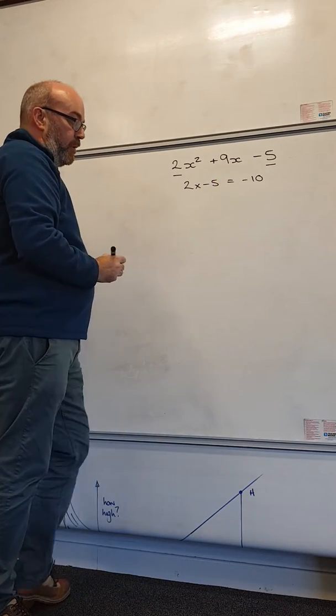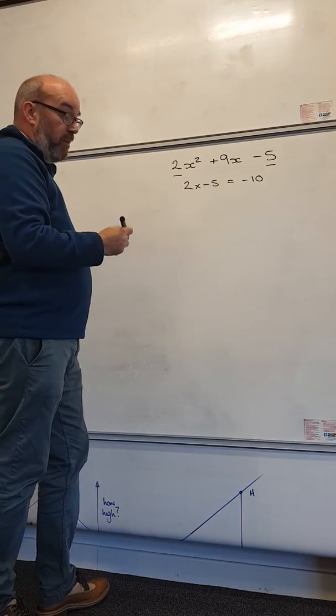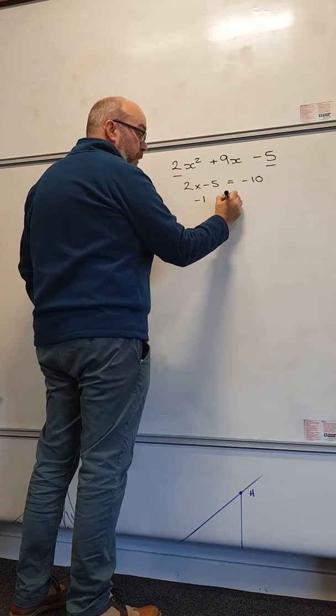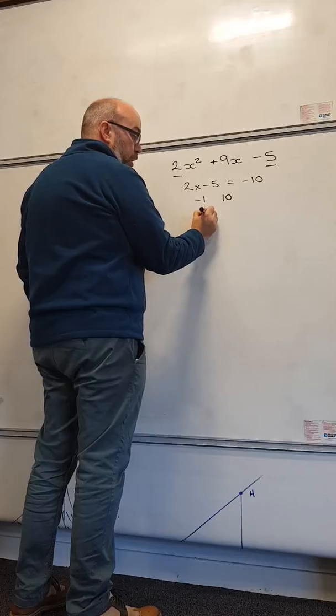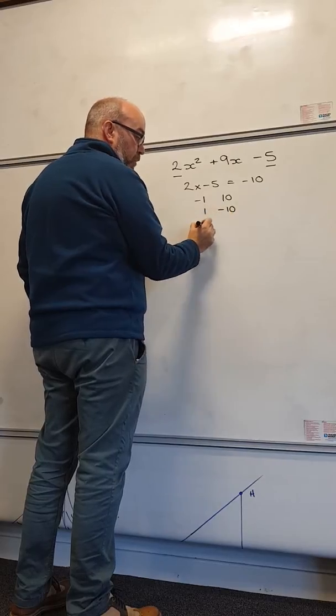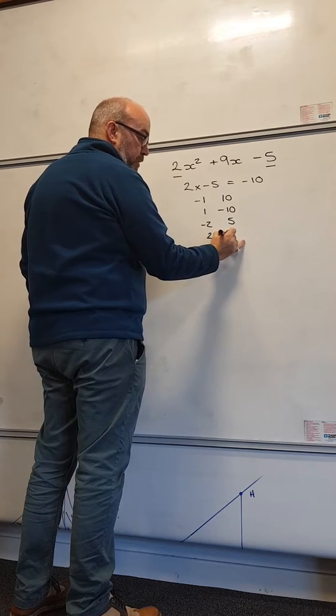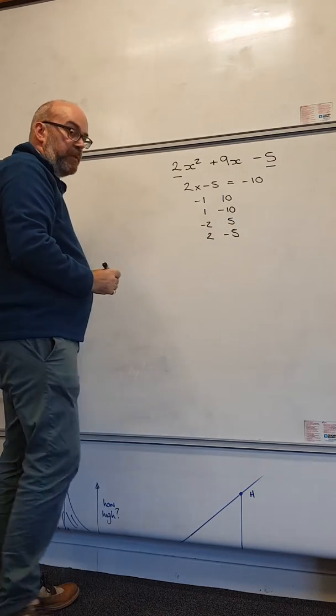What I'm now going to do is find all the factors of minus 10. So I've got minus 1 and 10, 1 and minus 10, minus 2 and 5, and 2 and minus 5. There are no more factors.